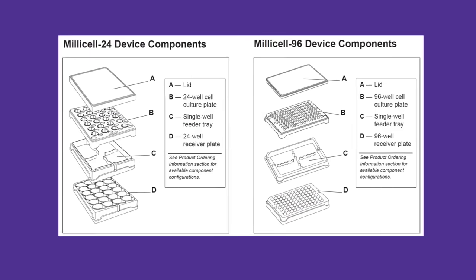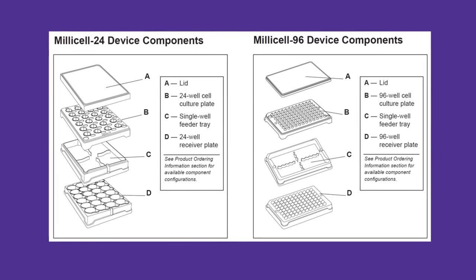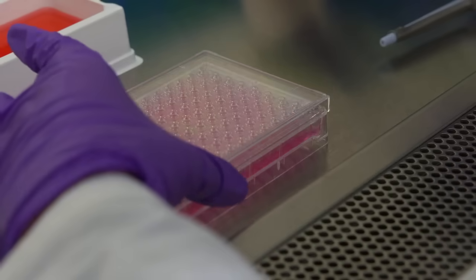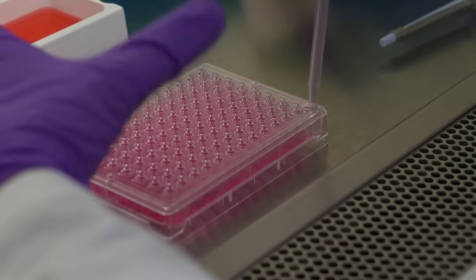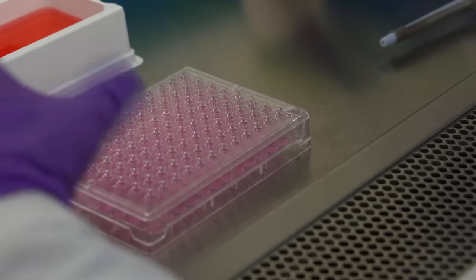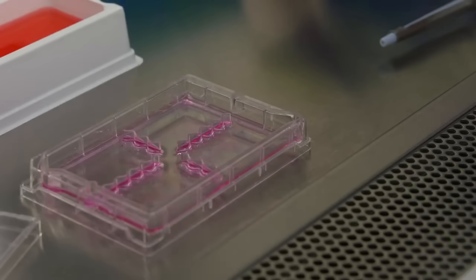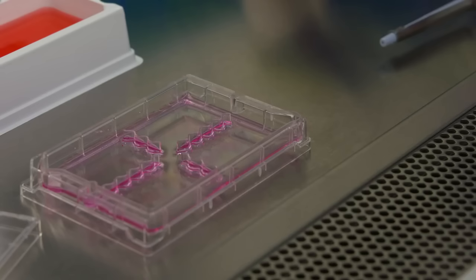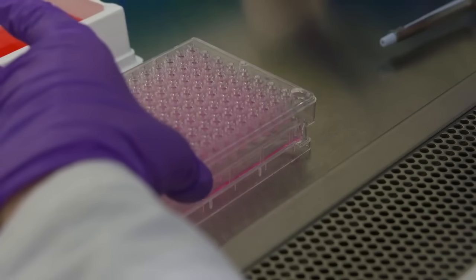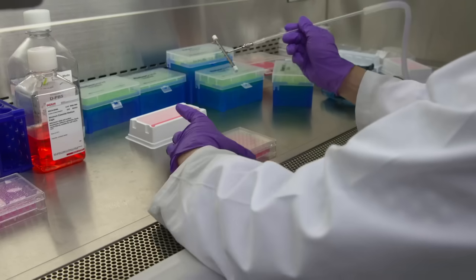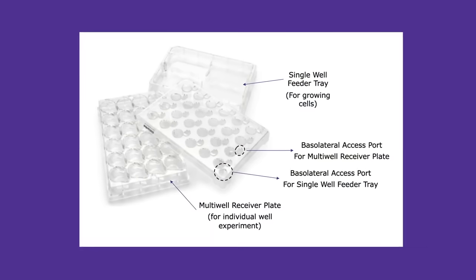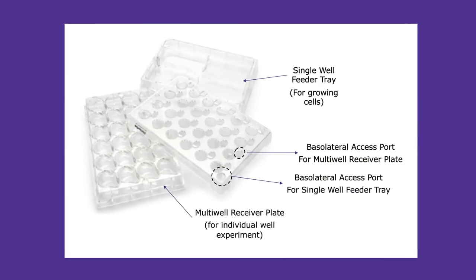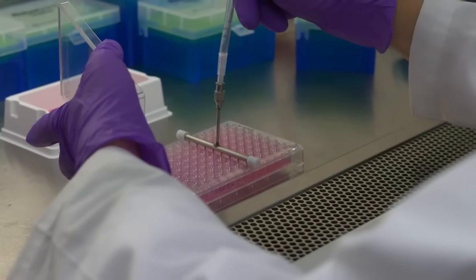As you can see, these come in either 24 or 96 well format. Let me show you the individual components. Once you remove the cover you will see the filter plate itself with its associated basolateral access port to the side. Underneath it you will find the receiver plate, which comes in two flavors. One is a single well feeder tray which enables all the wells to be fed from one type of media present in the basolateral media — usually used for initial culturing of the cells. The other is a multi-well receiver plate which enables individualized treatment of each well, just like a regular multi-well plate, and is typically used for the actual assay where different wells need to be treated differently.